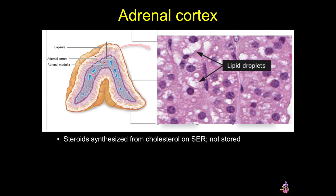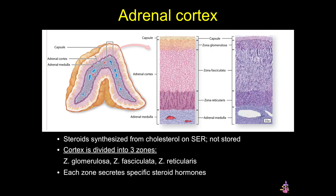The cortex is divided into three zones: the zona glomerulosa, the zona fasciculata, and the zona reticularis. Each zone is going to produce specific hormones — mineral corticoids, glucocorticoids, and androgens, respectively.